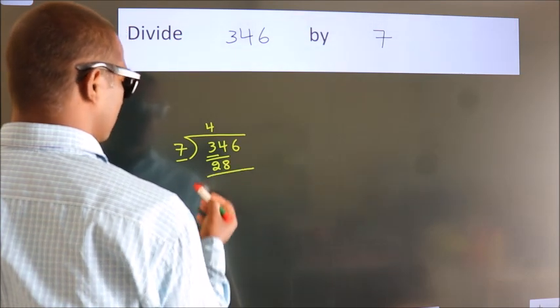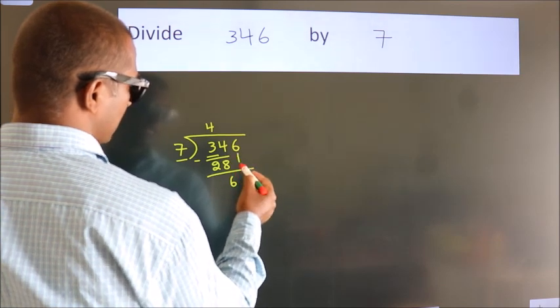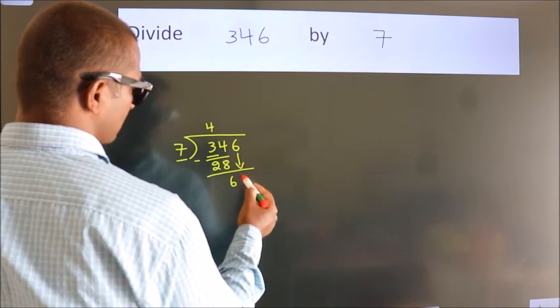Now, we should subtract. We get 6. After this, bring down the beside number. So, 6 down, giving us 66.